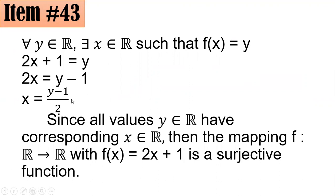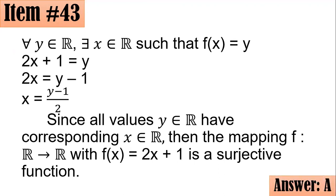This gives x = (y − 1)/2. Is there a value of y in the codomain that makes x undefined? No — the denominator is non-zero, so x will always be real if y is any real number. Since all values of y in the codomain ℝ have a corresponding x in the domain ℝ, the mapping f(x) = 2x + 1 from ℝ to ℝ is surjective — onto. Letter A: Yes.